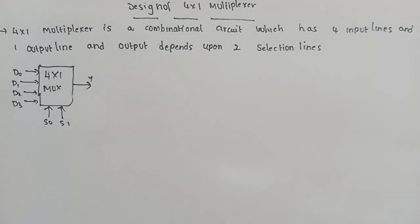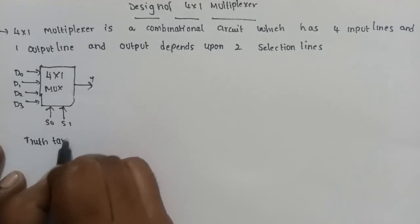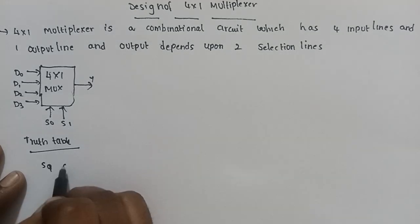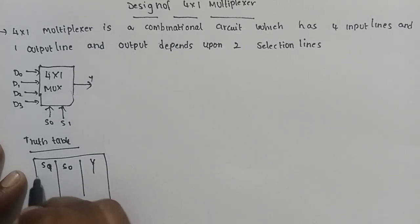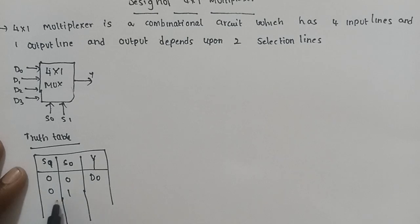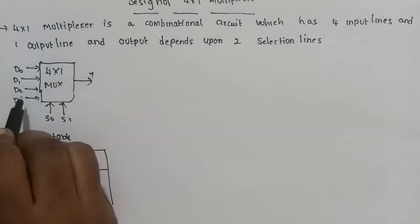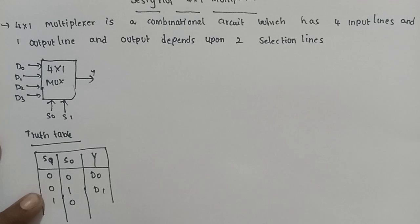Let's look at the truth table. The inputs are S1 and S0, which determine the output. When both S1 and S0 are 0, the D0 line is the output. When S1 is 0 and S0 is 1, the D1 value is the output. When S1 is 1 and S0 is 0, D2 will be the output. When S1 is 1 and S0 is 1, D3 is the output.